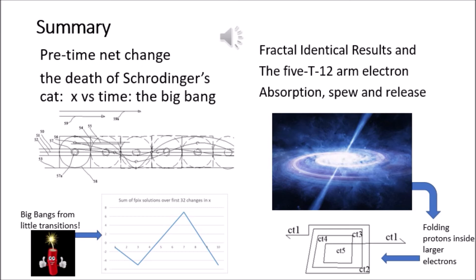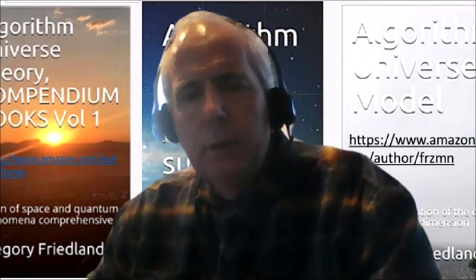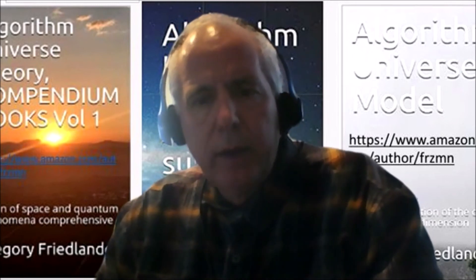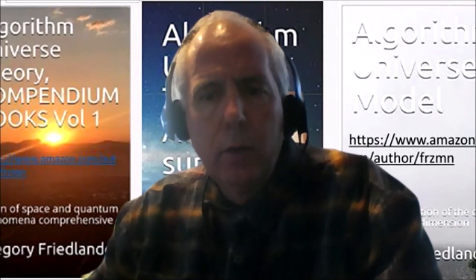And a black hole functions in an identical fashion, although it does spew a higher CT state than a neutron, in this case visible light. More information on the math and results can be found in the audio and written books under the title Algorithm Universe, available on Amazon.